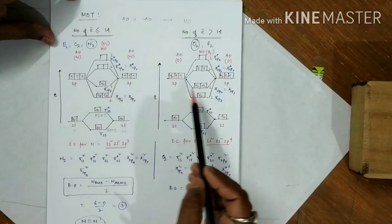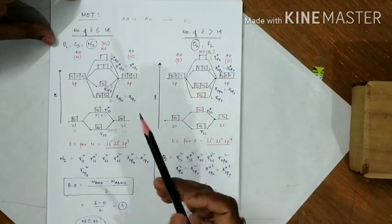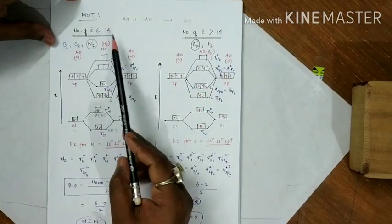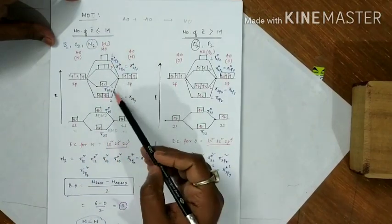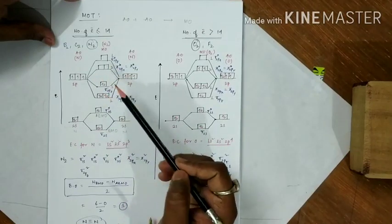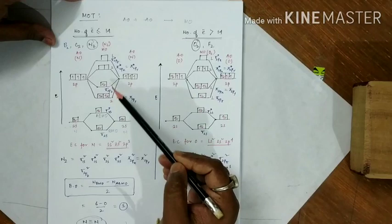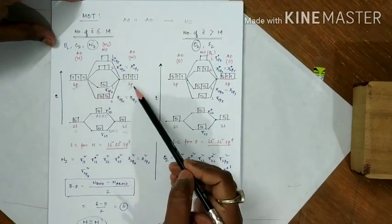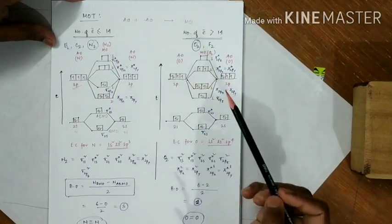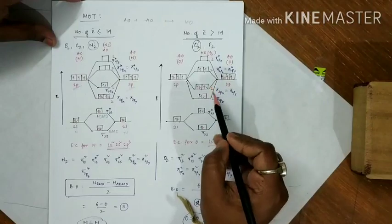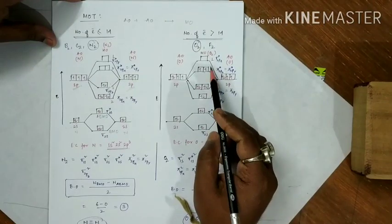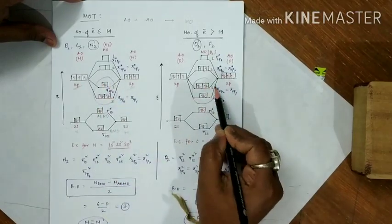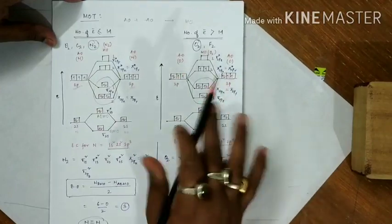The two diagrams differ in only one part. For total electrons ≤14, the 2p set of orbitals has the arrangement 2,1,2,1 — meaning the π2px and π2py orbitals come before σ2pz. For total electrons >14, the arrangement becomes 1,2,2,1 — the σ2pz is lower in energy than π2px and π2py. Everything else remains the same.